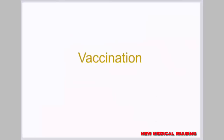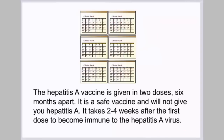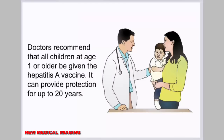The hepatitis A vaccine is available internationally and can prevent infection with the hepatitis A virus. It is given in 2 doses, 6 months apart. It is a safe vaccine and will not give you hepatitis A. It takes 2 to 4 weeks after the first dose to become immune. Doctors recommend that all children at age 1 or older receive the hepatitis A vaccine, which can provide protection for up to 20 years.